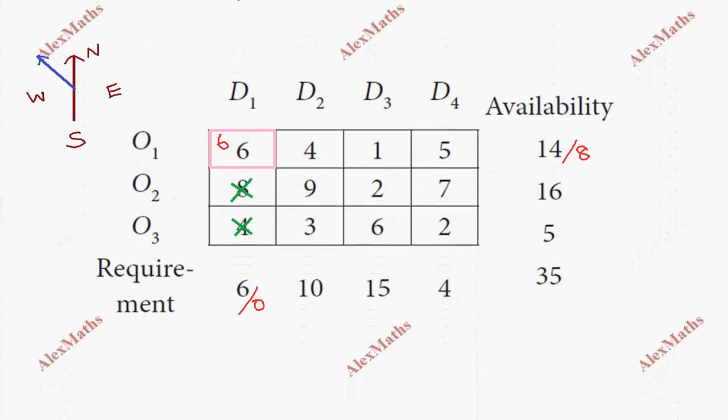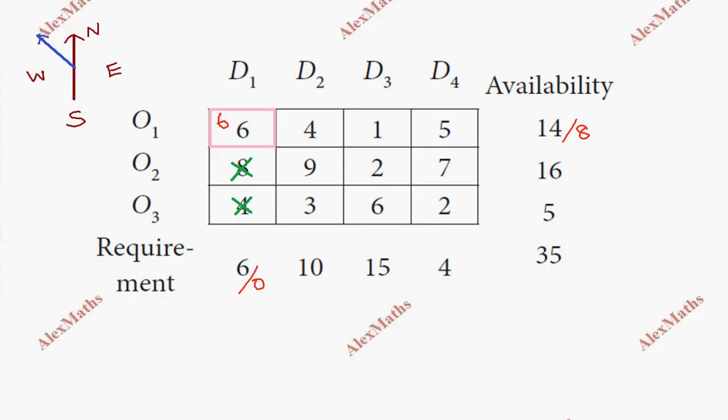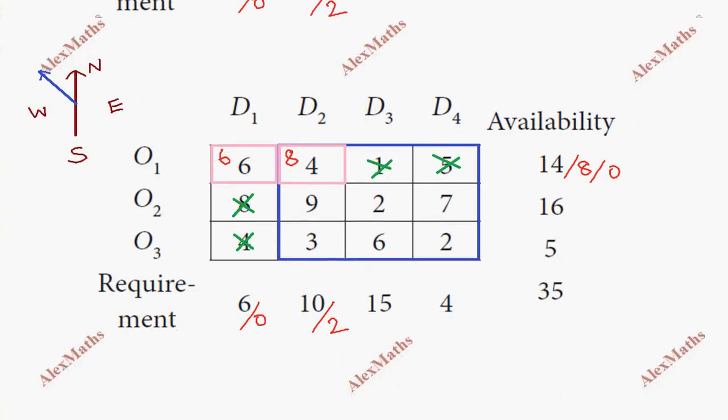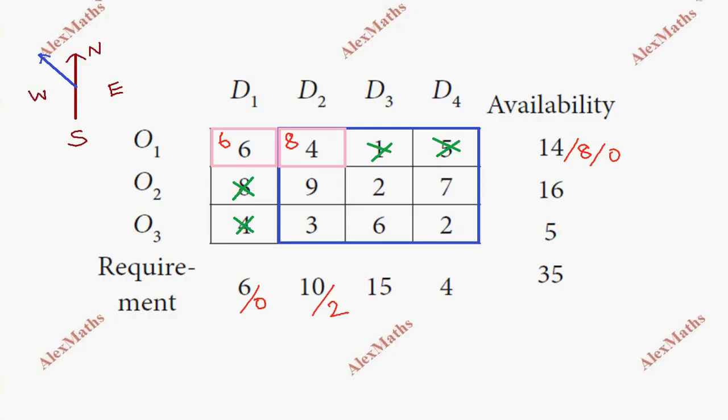For the second allocation, we rewrite the table. The first column requirement is complete, so we ignore it. Now the north-west corner is this cell. The requirement is 10 units and we have 8 available. We can supply all 8 units, so the requirement balance is 10 minus 8 equals 2, and availability becomes 0.